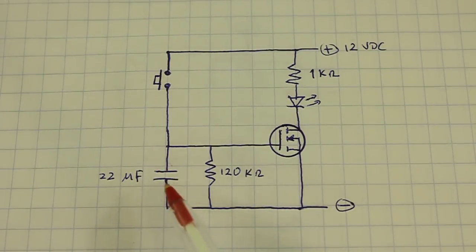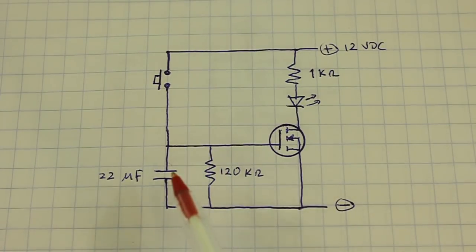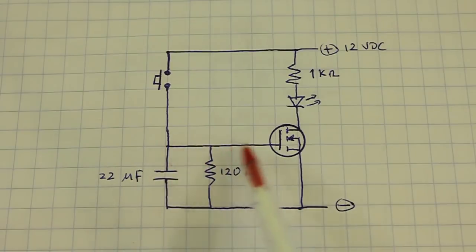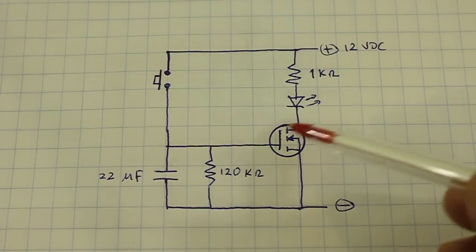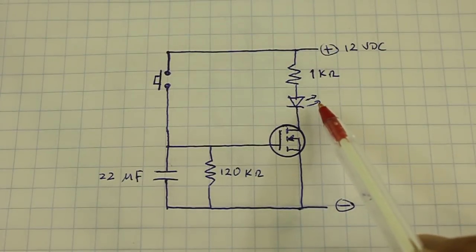However, the capacitor is discharging through this resistor. When the capacitor discharges, the voltage at the gate is 0V, so the MOSFET turns off and so the LED.